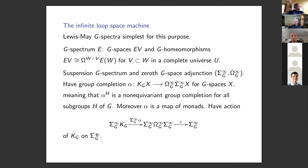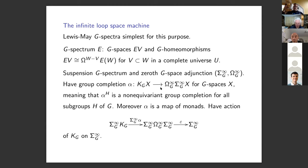The infinite loop space machine takes G-space level data to G-spectra. For this talk it's most convenient to use the simplest definition of G-spectra from the early 1980s: G-spaces and G-homeomorphisms as structure maps for all finite dimensional V contained in W in a complete universe. There are suspension G-spectra, and this is why I want to use Lewis-May G-spectra — you cannot have an adjunction like this in a good modern category of spectra.